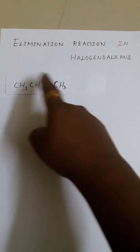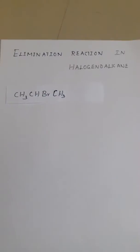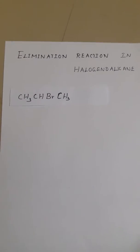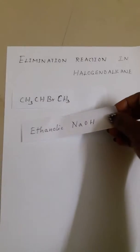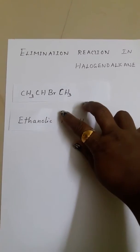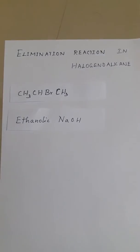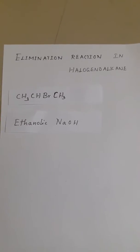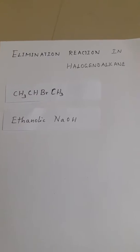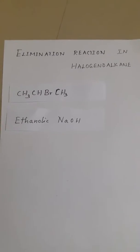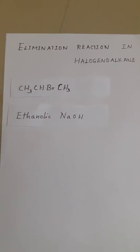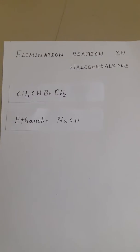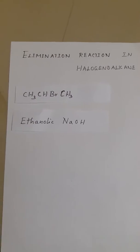So when a halogeanoalkane reacts with ethanolic NaOH — that is NaOH dissolved in ethanol — we need to understand why we prefer ethanolic NaOH. Why can't we use aqueous NaOH, that is NaOH with water? We have already seen in substitution reactions that we need water with ethanol, so now let's compare the two.